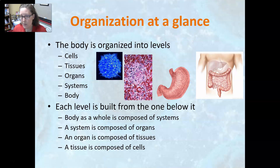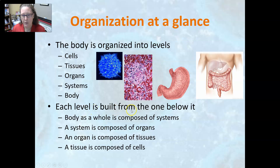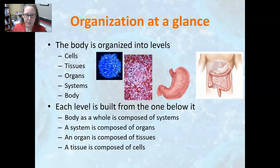The body is organized into levels. The smallest level is the cell, at the cellular level. Then cells are grouped into tissues, tissues are grouped into organs, organs are grouped into organ systems, and organ systems together make up the body. Each level is built from the one below it, so the body as a whole is made of organ systems, organ systems are composed of organs, organs are composed of tissues, and tissues are composed of cells.